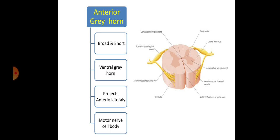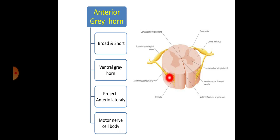Next we are going to discuss the anterior grey horn. This anterior grey horn is broad and short, and is also known as the ventral grey horn. It projects anterolaterally, and from it the motor nerve is exiting out. The cell bodies of the second order motor neurons are lying here. From their cell body axons arise and continue to supply the muscles.